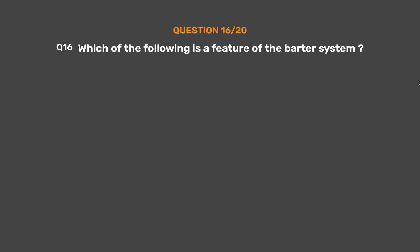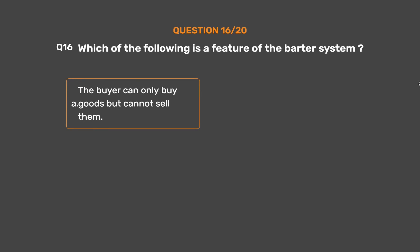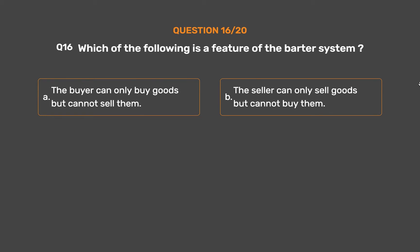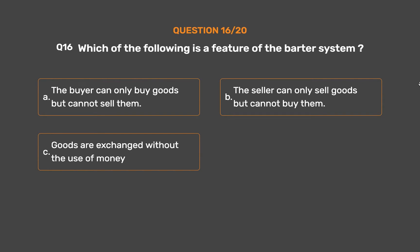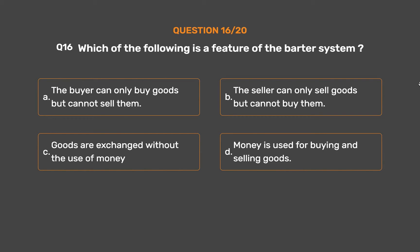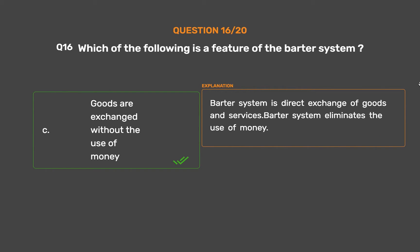Question No. 16. Which of the following is a feature of the barter system? Option A: The buyer can only buy goods but cannot sell them. Option B: The seller can only sell goods but cannot buy them. Option C: Goods are exchanged without the use of money. Option D: Money is used for buying and selling goods. The correct answer is Option C: Goods are exchanged without the use of money. Barter system is the direct exchange of goods and services and eliminates the use of money.